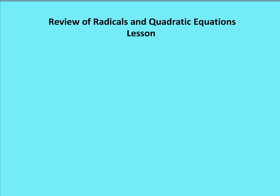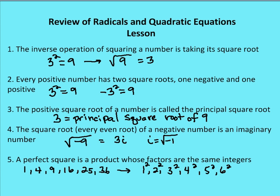Let's get started with some basics. We'll talk about square roots, what we mean by taking a square root, and what squaring a number means. The inverse operation of squaring a number is taking a square root. For example, 3 squared is equal to 9, so the inverse operation gives us the square root of 9, which is equal to 3.